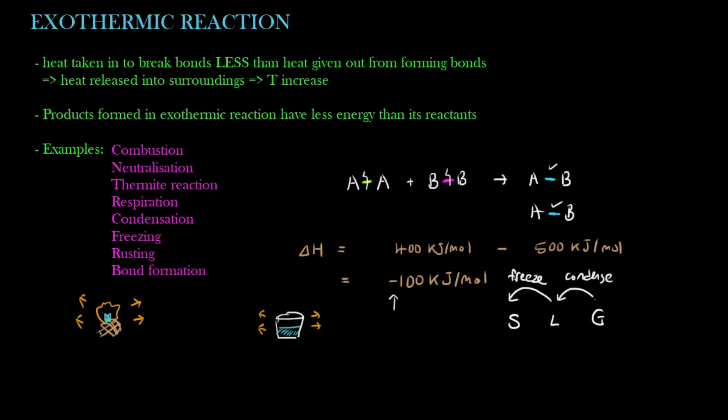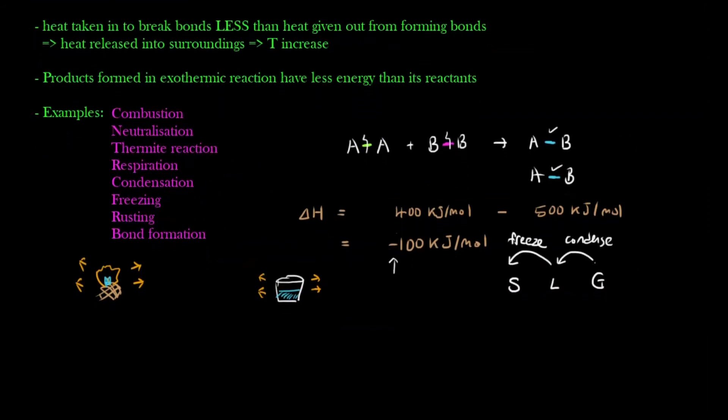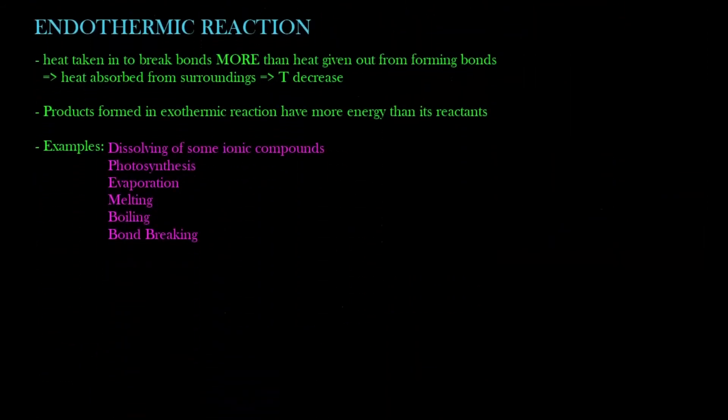Let's look at endothermic reactions. So endothermic reactions are basically the opposite of exothermic reactions. What do I mean? Now heat taken in to break bonds is more than the heat given out from bond formation. Let me use the same example again. So I have A₂ plus B₂ to give me two molecules of AB.